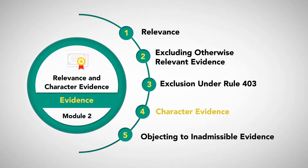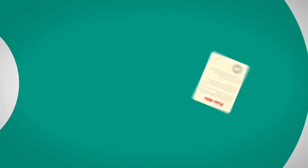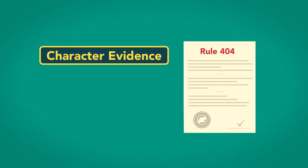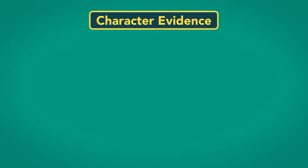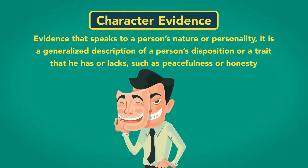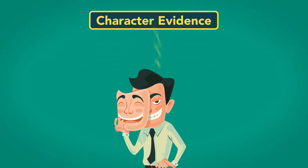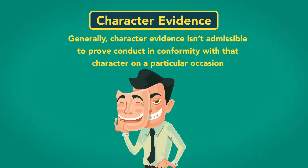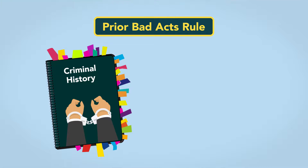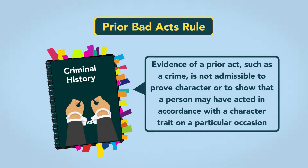Character evidence. We now move to Rule 404, which outlines the rules regarding character evidence. Character evidence is defined as evidence that speaks to a person's nature or personality — a generalized description of a person's disposition or trait that he has or lacks, such as peacefulness or honesty. Generally, character evidence is not admissible to prove conduct in conformity with that character on a particular occasion. Related to the character evidence rule is the prior bad acts rule. Under that rule, evidence of a prior act, such as a crime, is not admissible to prove character or to show that a person may have acted in accordance with a character trait on a particular occasion.